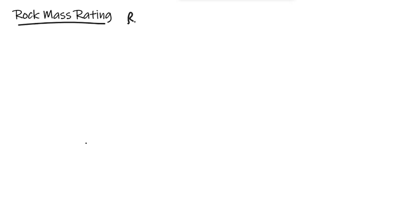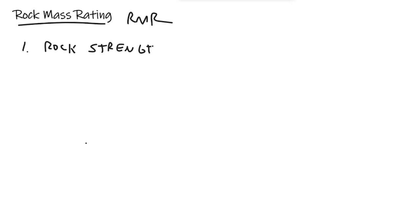Rock Mass Rating, or RMR, has several components. Five are the fundamental ones that were in Bieniawski's original RMR system. The first is rock strength — and when I say rock strength, I mean the individual rock. We're talking about either a UCS, uniaxial compressive strength, or a TCS, triaxial compressive strength.